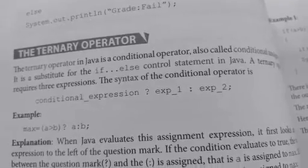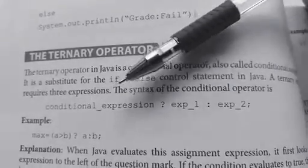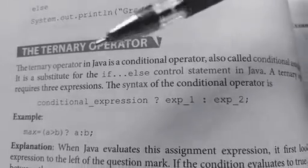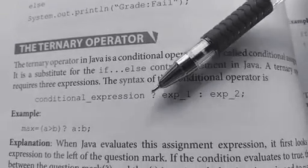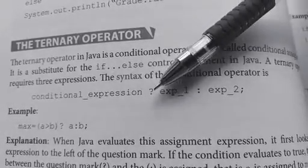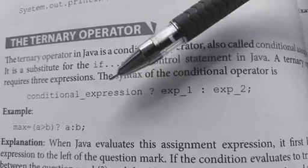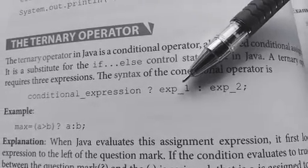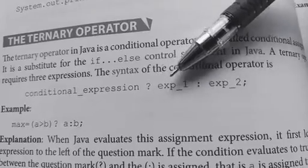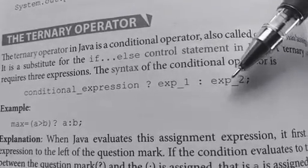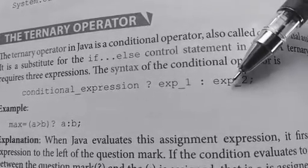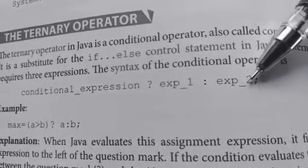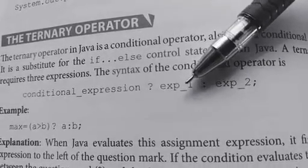When we use the ternary operator it requires three expressions. The syntax is: conditional expression, then question mark, expression 1, colon, expression 2, and then semicolon. In the conditional expression we are checking the condition, which is given before the question mark and enclosed in parentheses. If the condition is true, expression 1 — the true case — will be executed. If the condition is false, expression 2 — the false case — will be executed after the colon.